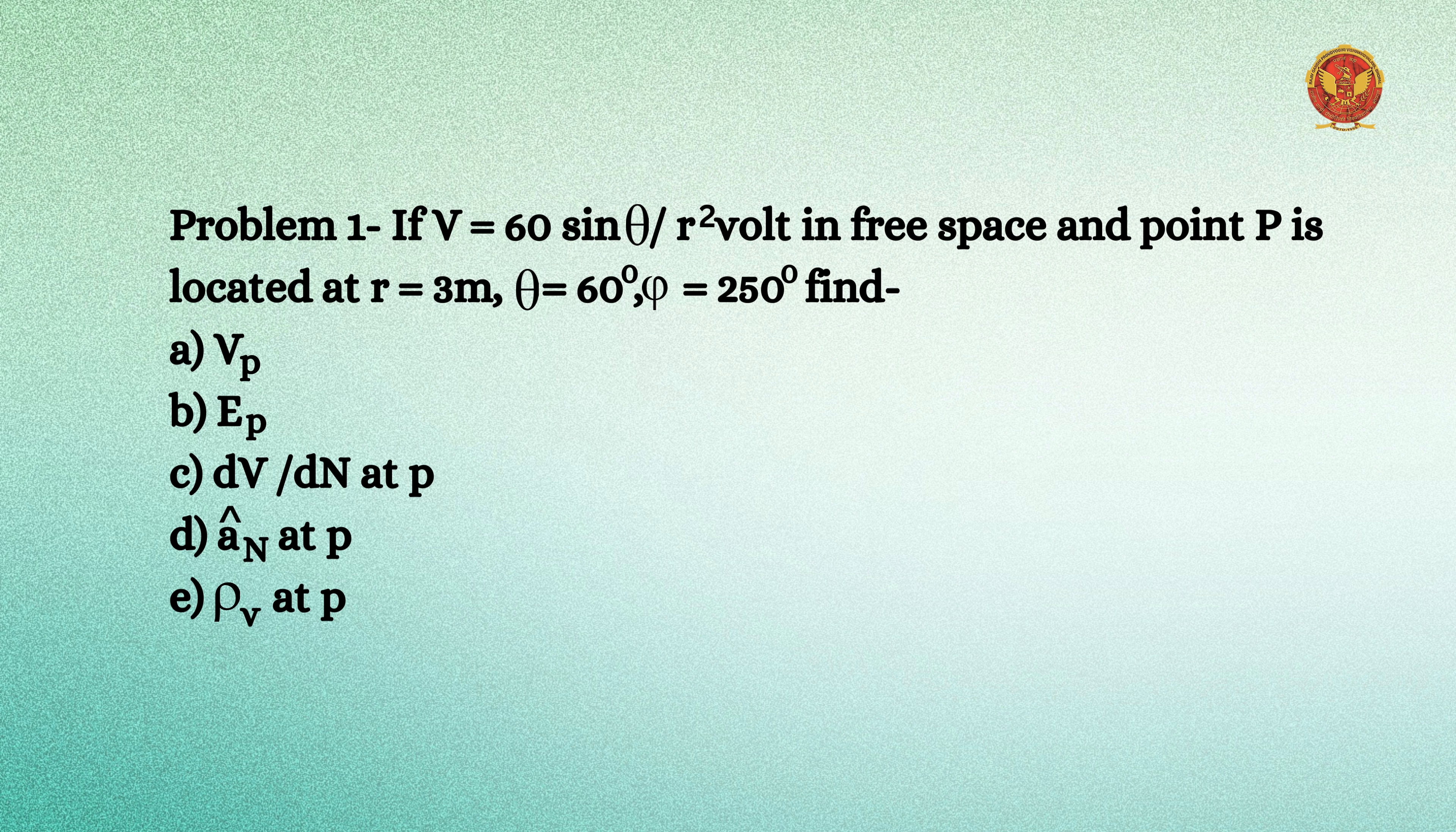If V is equal to 60 sin theta upon r square volts in free space and point P is located at r equal to 3 meters, theta equal to 60 degrees, and phi equal to 25 degrees.